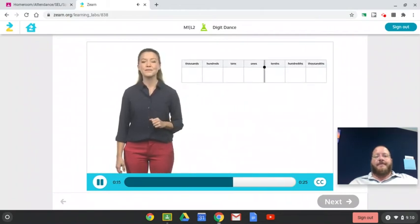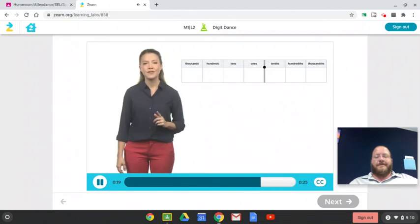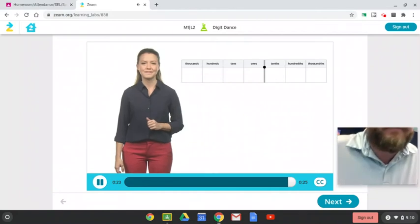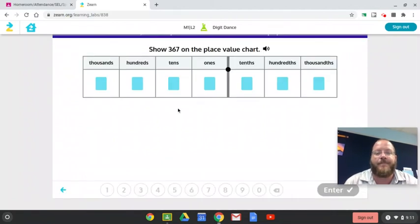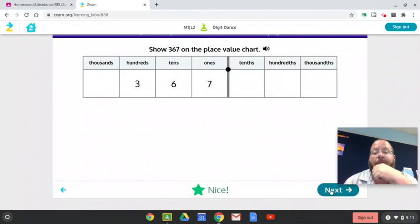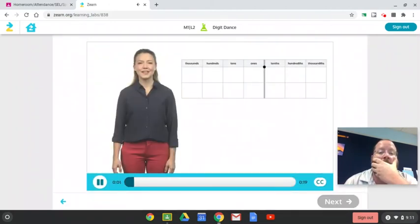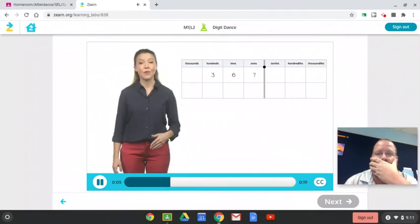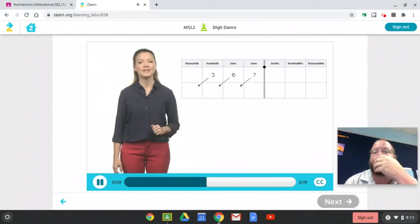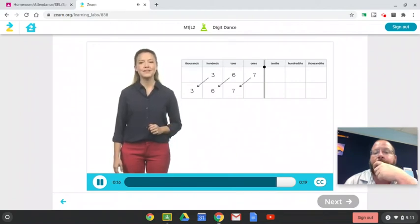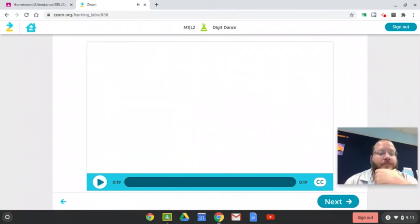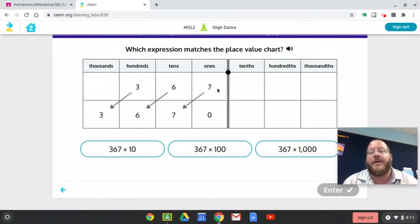Let's use the place value chart to help us multiply and divide. We'll start with 367. First, show 367 on the place value chart. It'll be 367. She moved them one place to the left. That means it got one place value bigger. That means I need one zero.